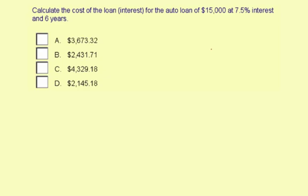Calculate the cost of the loan — the interest — for an auto loan of $15,000 at 7.5% interest over six years. We're interested in how much more you have to pay back than the original $15,000.